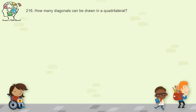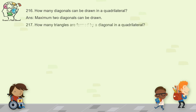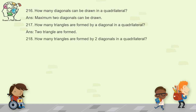Question 216: how many diagonals can be drawn in a quadrilateral? Maximum two diagonals can be drawn. Question 217: how many triangles are formed by one diagonal in a quadrilateral? One diagonal divides it into two triangles. Question 218: how many triangles are formed by two diagonals in a quadrilateral? Two diagonals divide it into four triangles.